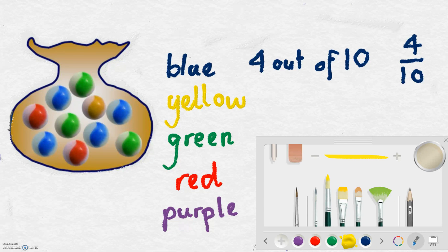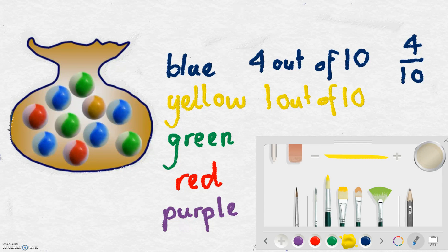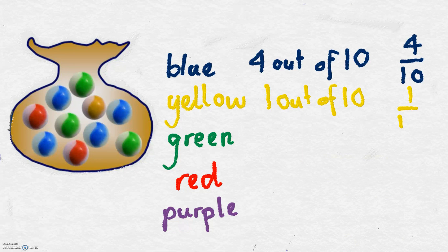Let's look at yellow. How many yellow marbles are there? Well, there's one marble. So I have one out of ten chance of selecting a yellow marble. We write that as a fraction. One out of ten.